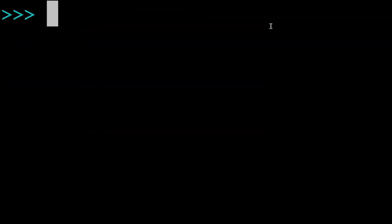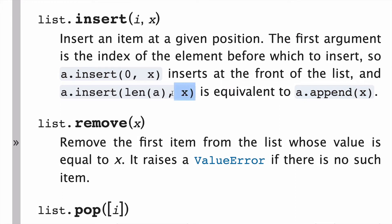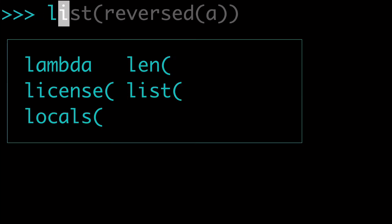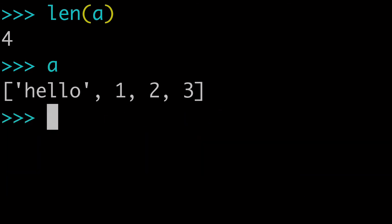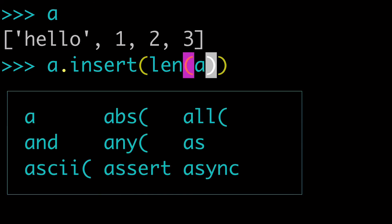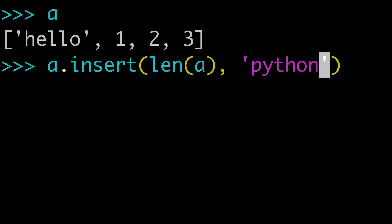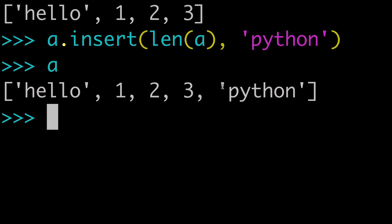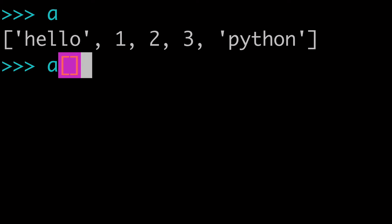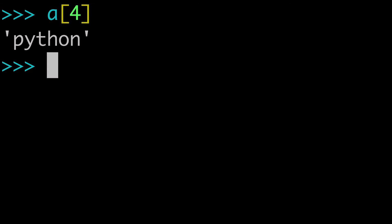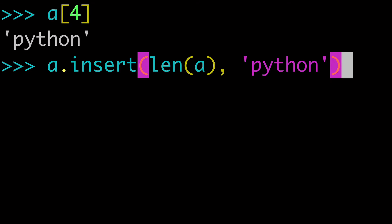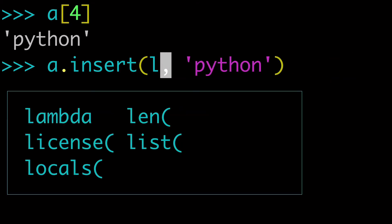Next, the docs mention that if you pass len(a) as your first argument, you'll be inserting at the end of the list. In this situation, len(a) would be 4 because we have 4 values. So if we do a.insert(len(a), 'Python'), when we look at a, we now have 'Python' at the end of the list. We can check that a[4] is in fact 'Python'.